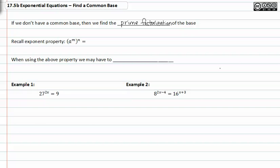Recall exponential property: (a^m)^n = a^(m·n). When using the above property we may have to distribute.